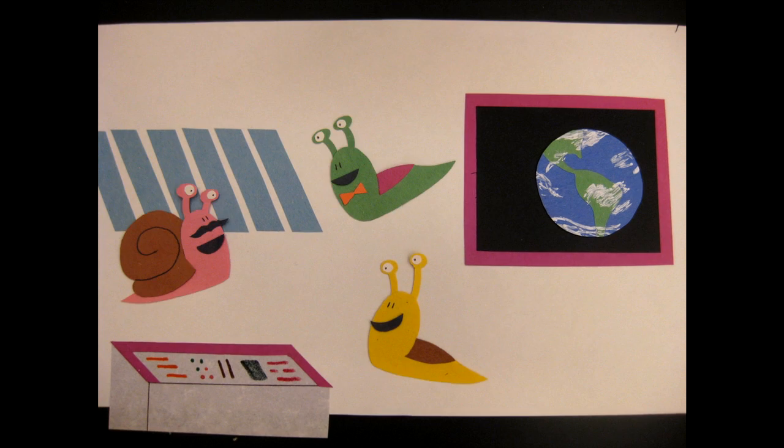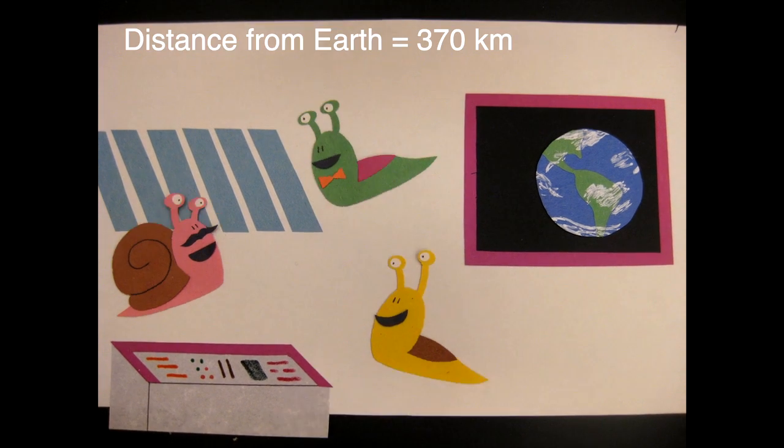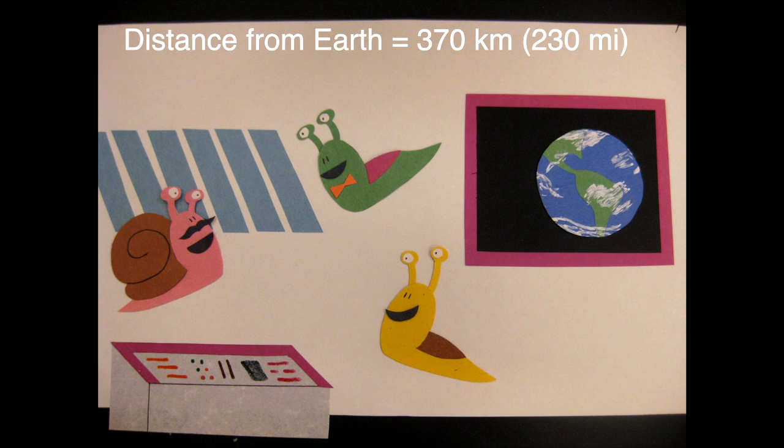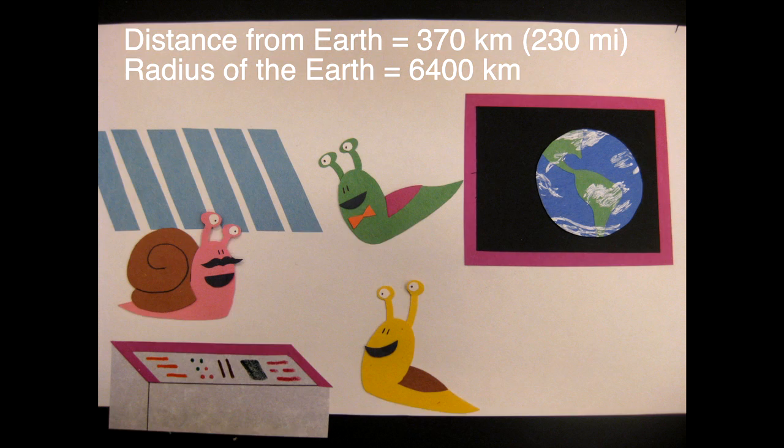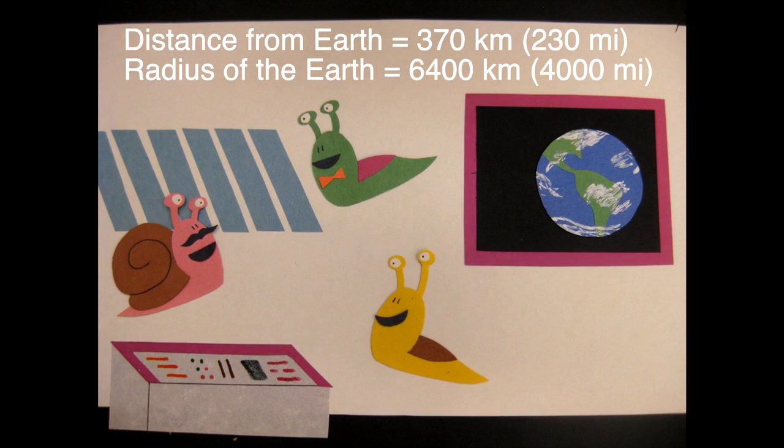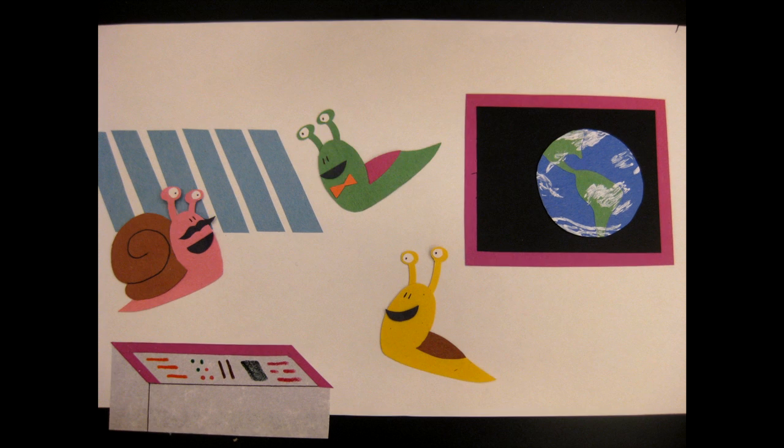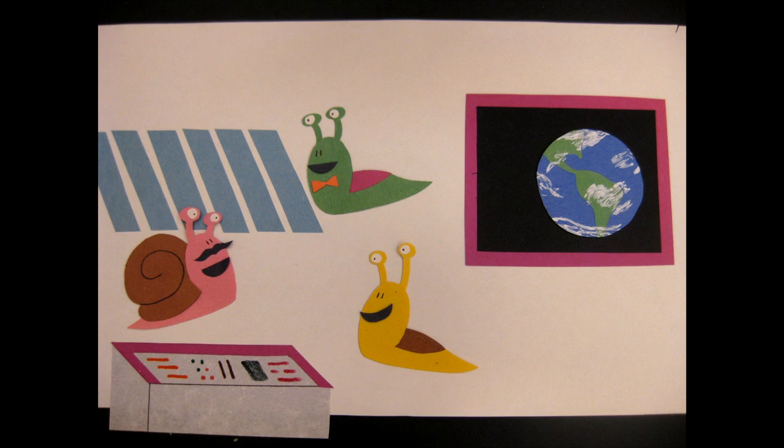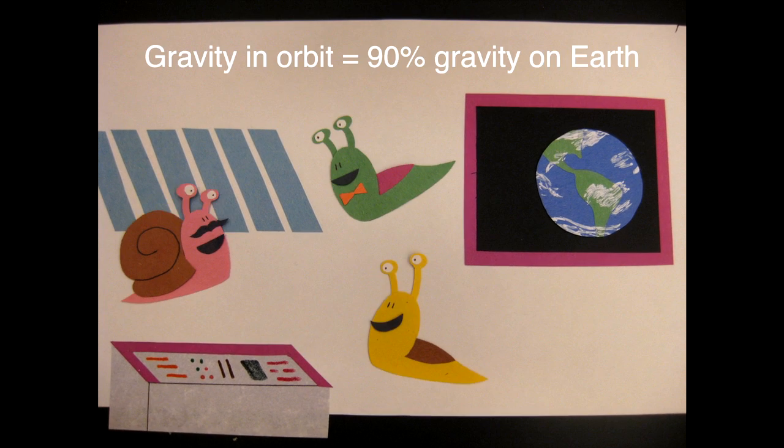Right here, we're only about 370 kilometers, 230 miles, from Earth's surface. Compared to the radius of the Earth, which is about 6,400 kilometers or 4,000 miles, that's a really small distance. And as a result, the force of gravity is almost as much as it is on the surface of the Earth. It's only about 10% less.